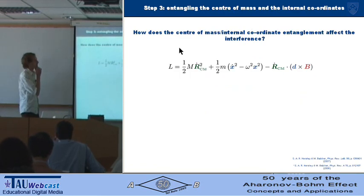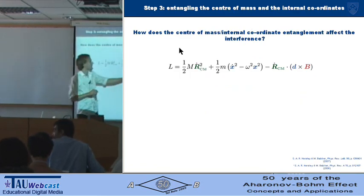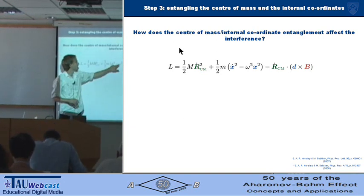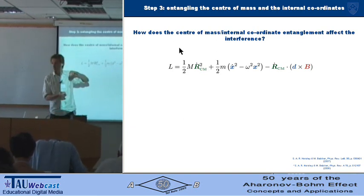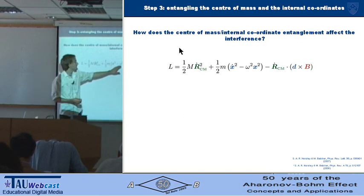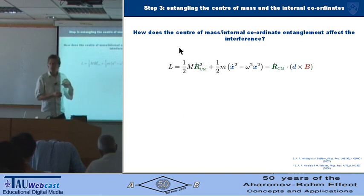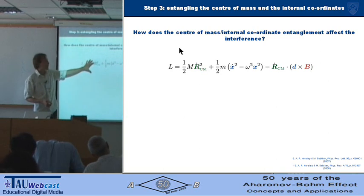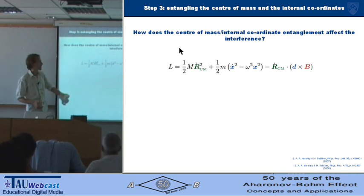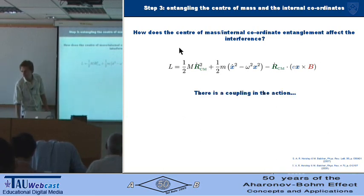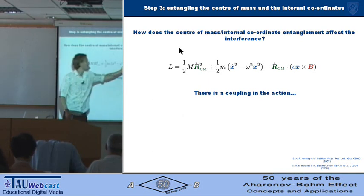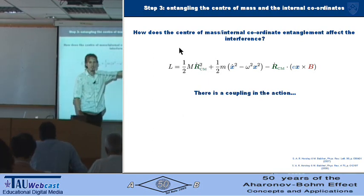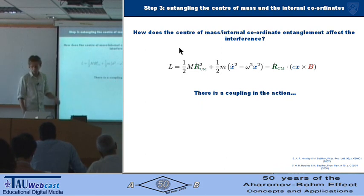So we take this model Lagrangian, which is our interaction term. The internal dynamics are the relative coordinate x, bound harmonically—so it's got a harmonic oscillator term—and we have the centre-of-mass kinetic energy. So the dipole moment d is just e times x. And you can see the coupling straight away between the centre of mass and the internal degrees of freedom in this experiment.